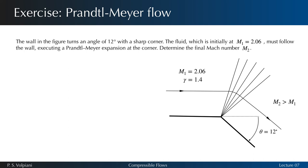Let's try an exercise now to see if you understood. The wall in the figure turns an angle of 12 degrees with a sharp corner. The fluid, which is initially at m1 equals 2.06, must follow the wall, executing a Prandtl-Meier expansion at the corner. Determine the final Mach number m2.